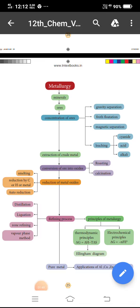Principles of metallurgy. Thermodynamic principles: Delta G is equal to delta H minus T delta S. Thermodynamic principles deals with Ellingham diagram.